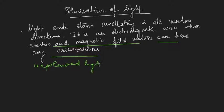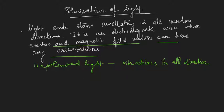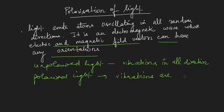Unpolarized light has vibrations in all directions. Now if I do something and achieve all these vibrations in a single direction, then I can call that polarized light. Polarized light is when the vibrations are confined in only one direction. But first we need to understand how we can represent unpolarized and polarized light.